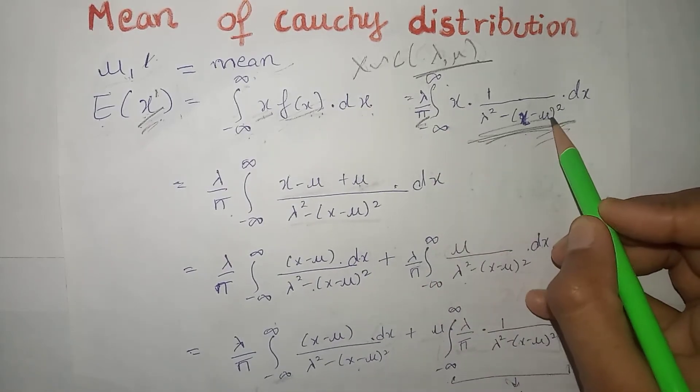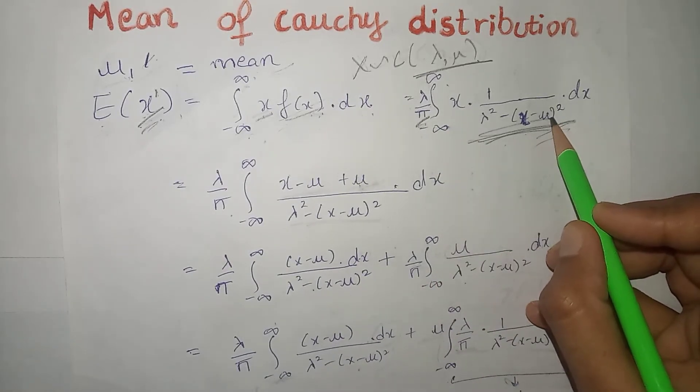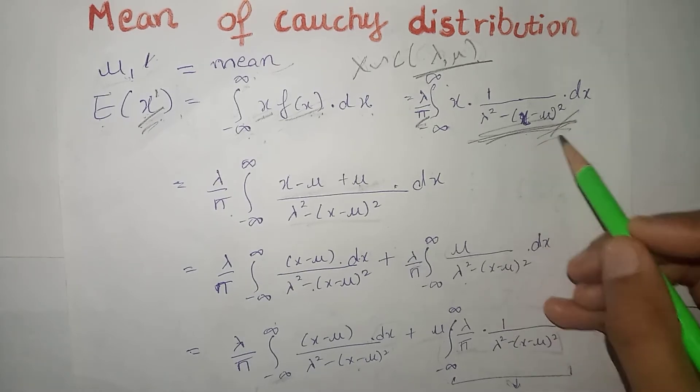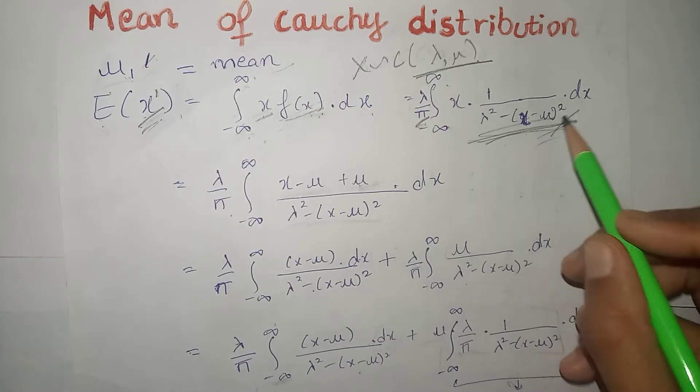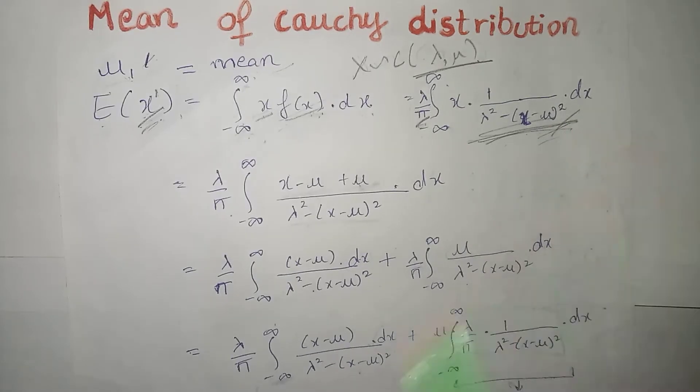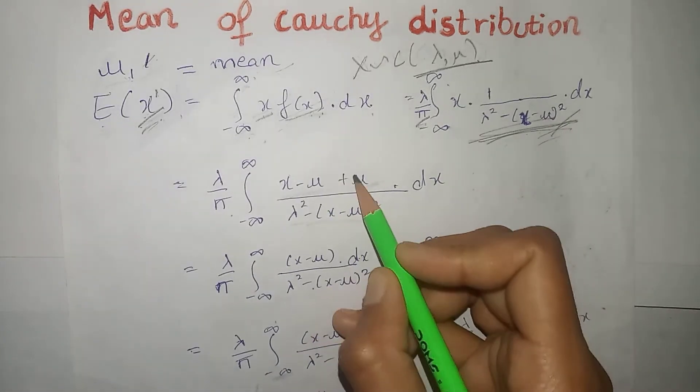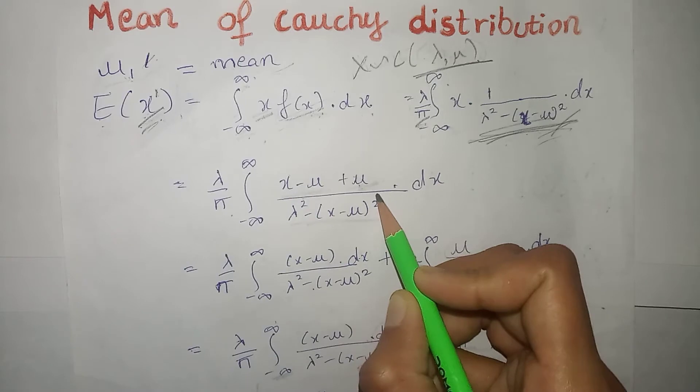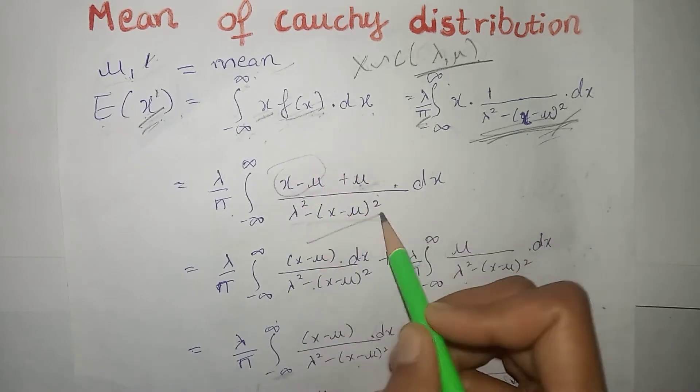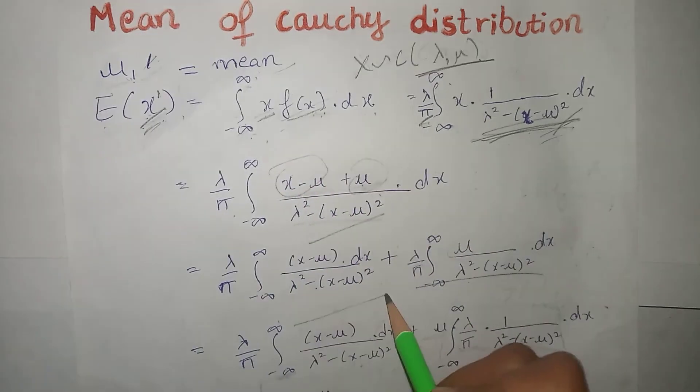Ab is ki value bhi aap niche description mein humne ek link di rakha hai, wahan par jaa kar check kar sakte hai, that is humne is ki value kaise nikali. Standard Cauchy variate se. Okay, now abh humne plus mu and minus mu kar diya. Next, ek baar iske niche ye term, ek baar iske niche ye term aagai humare paas.